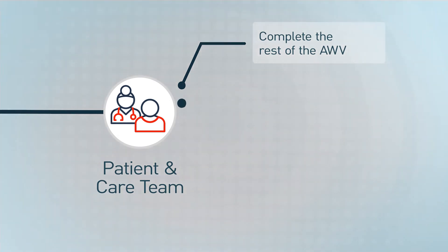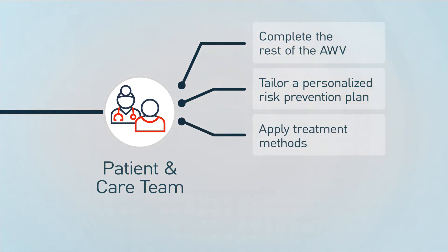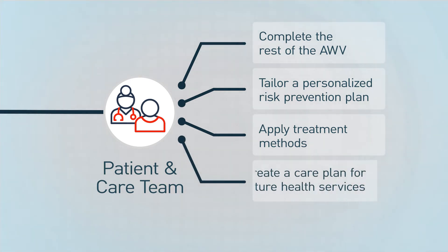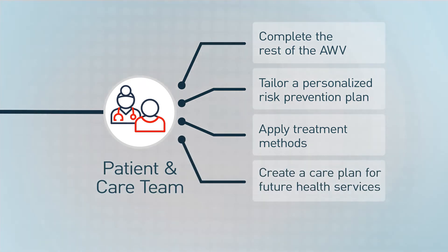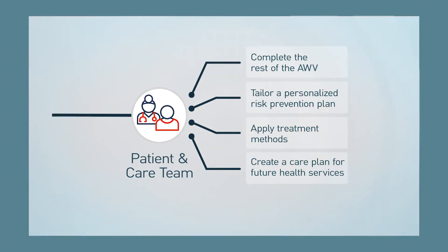Once a patient completes the health risk assessment, the rest of the annual wellness visit can be completed. A personalized risk prevention plan can be created and tailored for your patients. Treatment methods can be applied based on this gathered information. The health risk assessment can also be used to create a patient care plan that can include ongoing preventative service as well as general health management for the next 5–10 years.